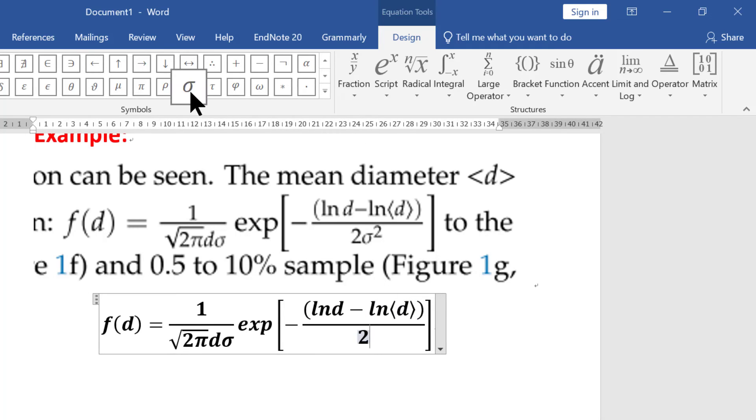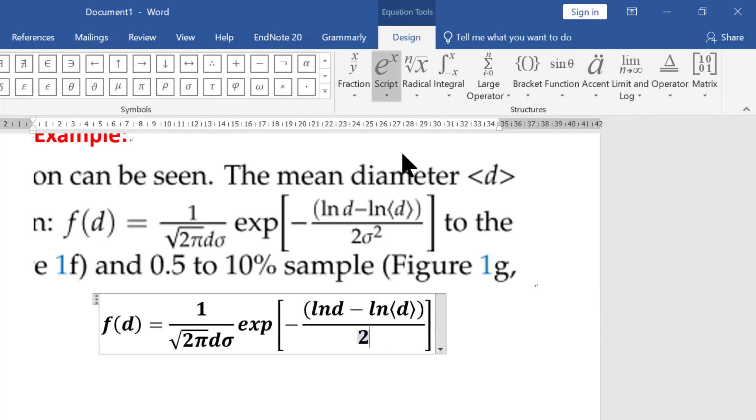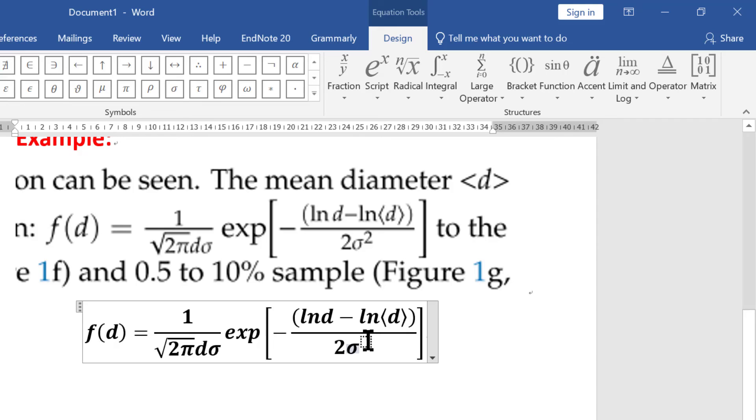Now you need to write a square of sigma. For that you need to choose the second option script. In the script there are four different options. We need to use a superscript, so use a superscript. The denominator square of sigma, so 2. That's it.